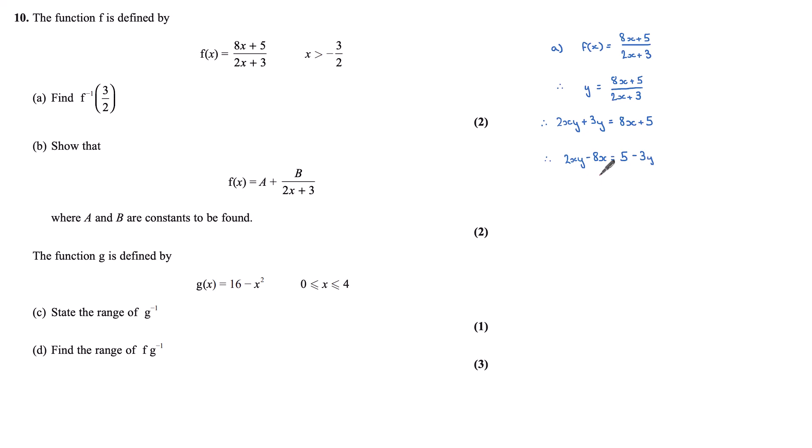I can factorise now for x, which gives me x(2y - 8). I can now divide through by that 2y - 8. So x in terms of y is x = (5 - 3y)/(2y - 8).